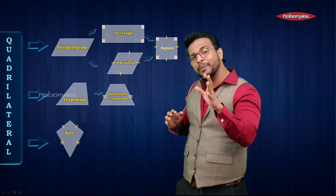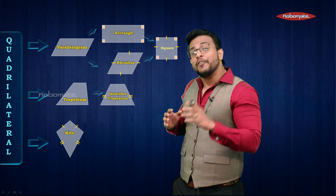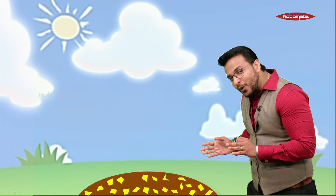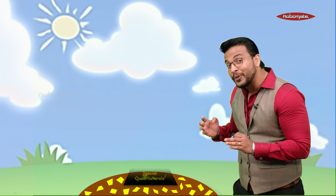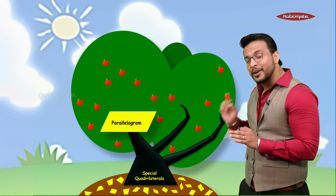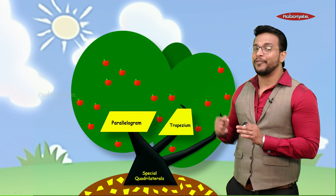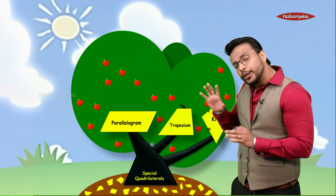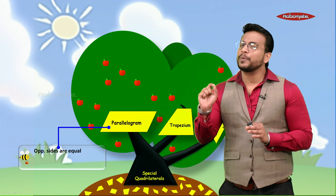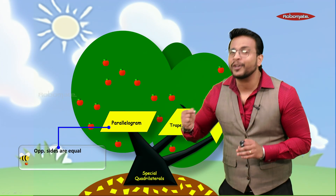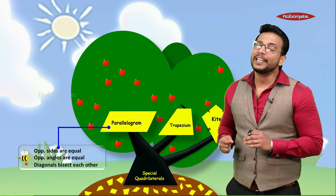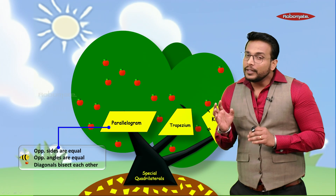Let's revise all quadrilaterals at one go. Quadrilaterals branch into three categories: parallelogram, trapezium, and kite. The properties of a parallelogram are: opposite sides are equal, opposite angles are equal, and diagonals bisect each other.